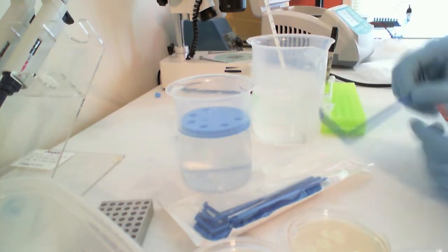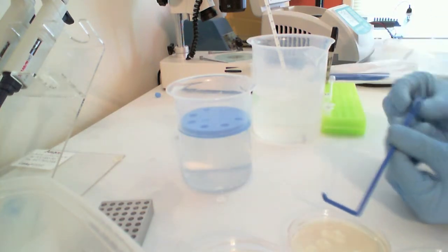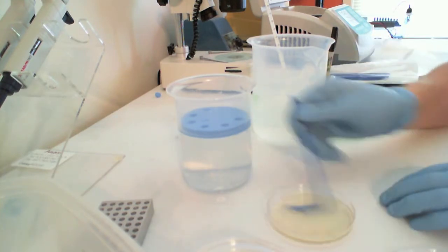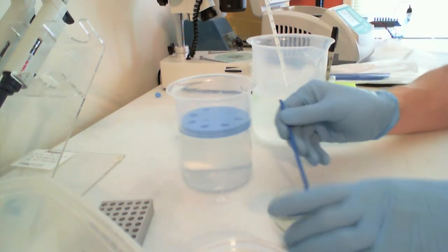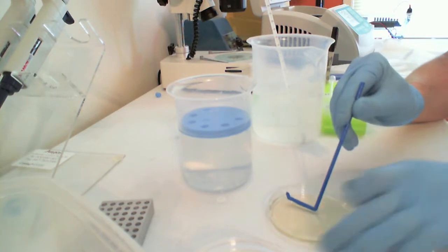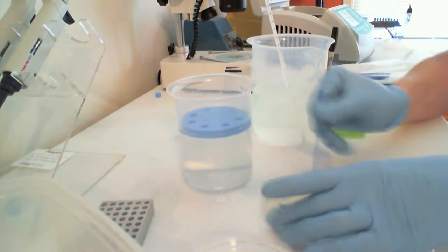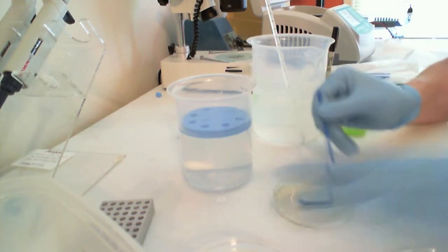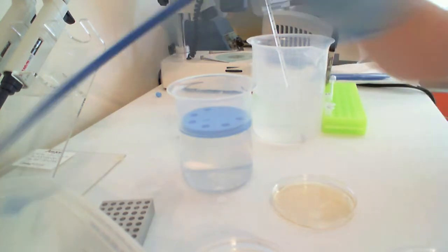Take out a spreader and simply work the bacteria into the agar. It helps to turn the plate as you spread the bacteria into the plate until it's all absorbed. When you think you've done enough spreading, throw your spreader away.